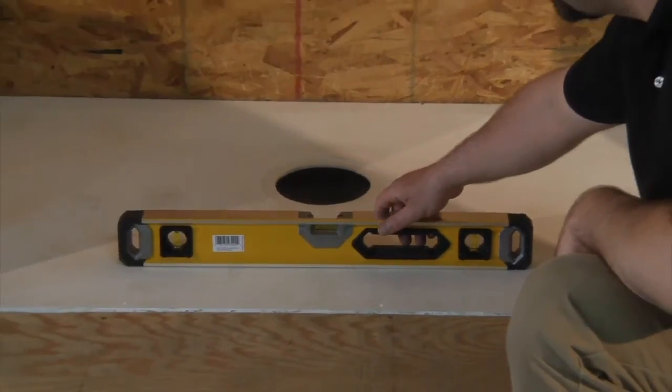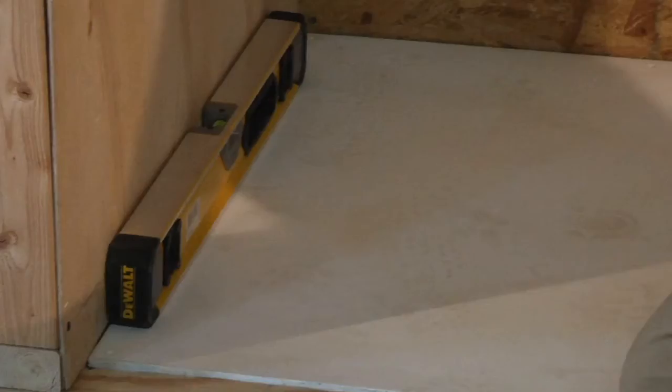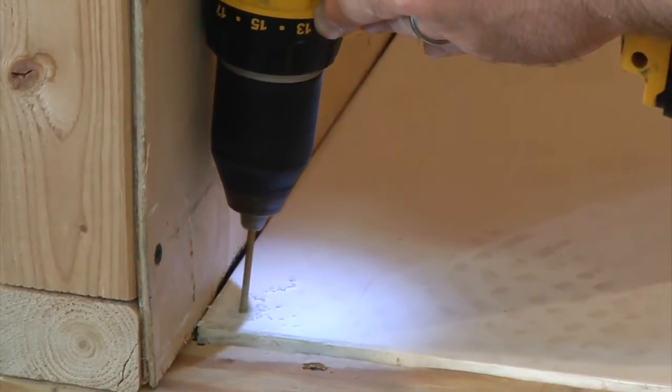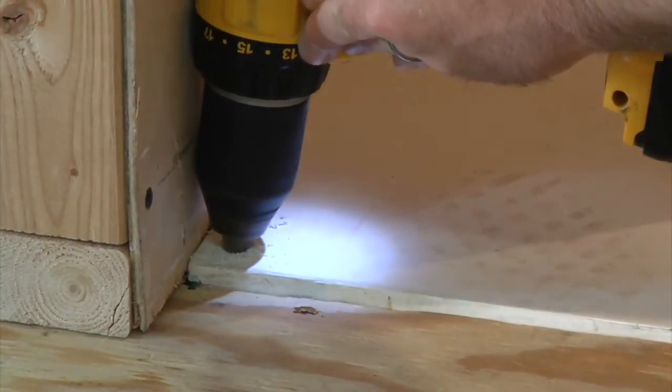After the pan is securely attached, double-check that the pan is level across the front, along the width, and diagonally. If you find it necessary to drill a hole for fastening along the perimeter, you'll need to countersink that screw.